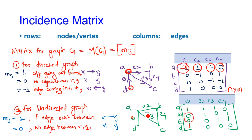In an undirected graph, we are not concerned about whether an edge is incoming or outgoing. So if there exists an edge which is attached to that particular vertex, the entry will always be written as 1. There will be no minus 1 entry in the undirected graph for the incidence matrix. This is the example for the incidence matrix.